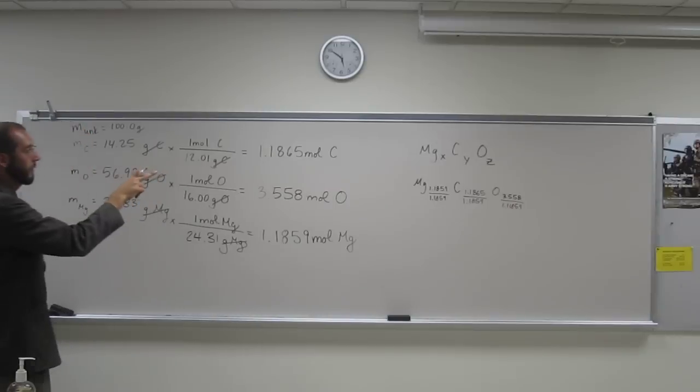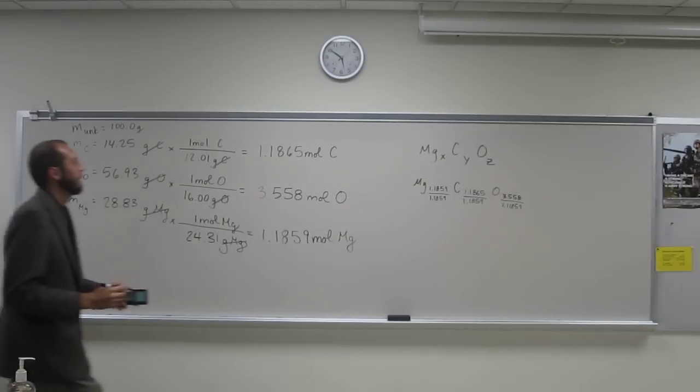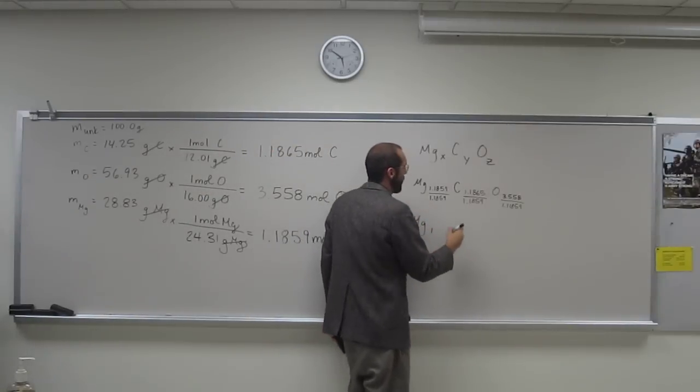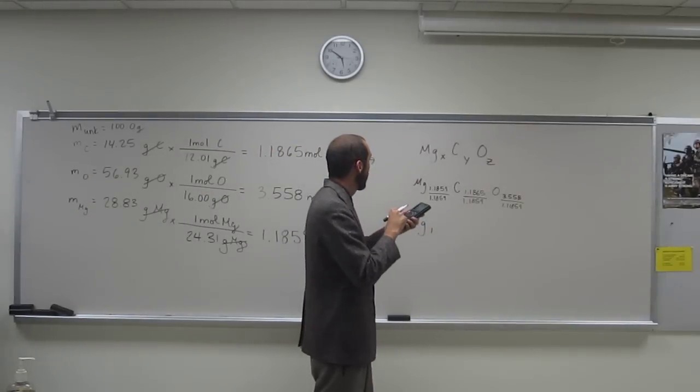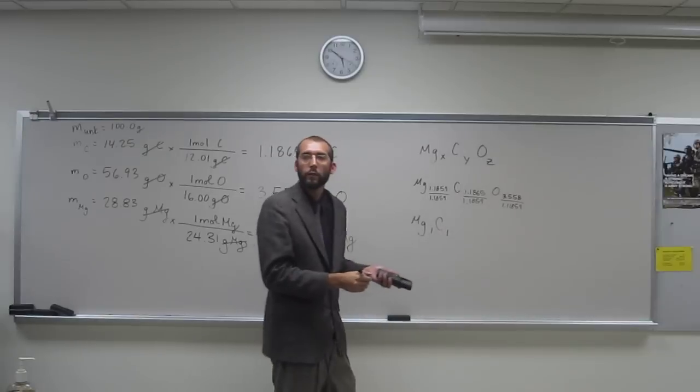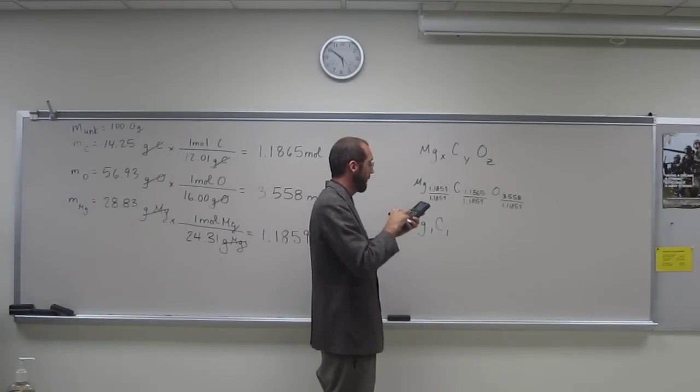And then oxygen's going to be 3.558 divided by 1.1859. So I got those right, right? So carbon, 1.00. Magnesium, 1.00. Oxygen, 3, right? Okay, so now what do we do? We just divide. So magnesium, 1, carbon. So we'll take, well, carbon's going to be effectively 1, right? And then oxygen gets 3.558 divided by 1.1859.